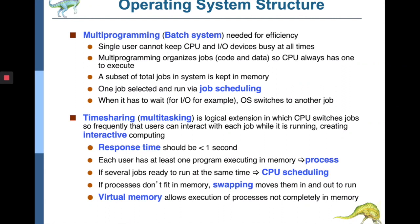The CPU should not be kept running only one particular application or program, and should not be acquired by a single user. In a multi-programming environment, jobs are organized in a way that the CPU is always busy — focusing on 100% utilization of hardware by stacking jobs so that each time a process is completed or waiting for I/O operations, it is switched and replaced by another process.